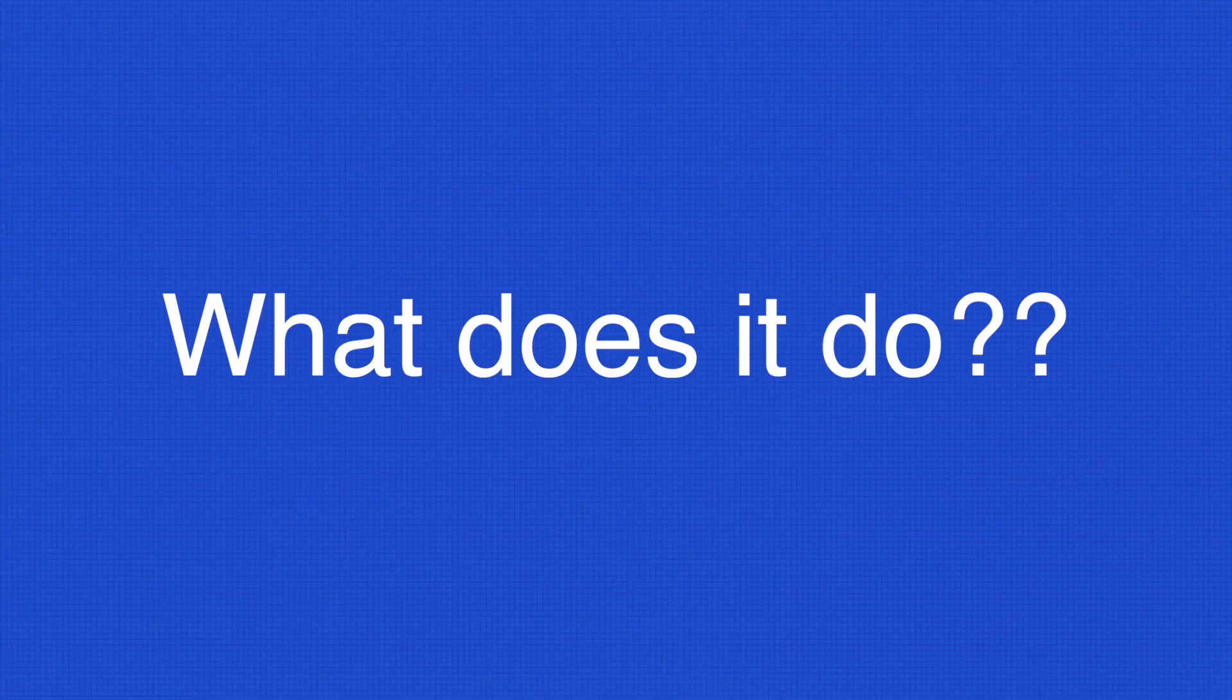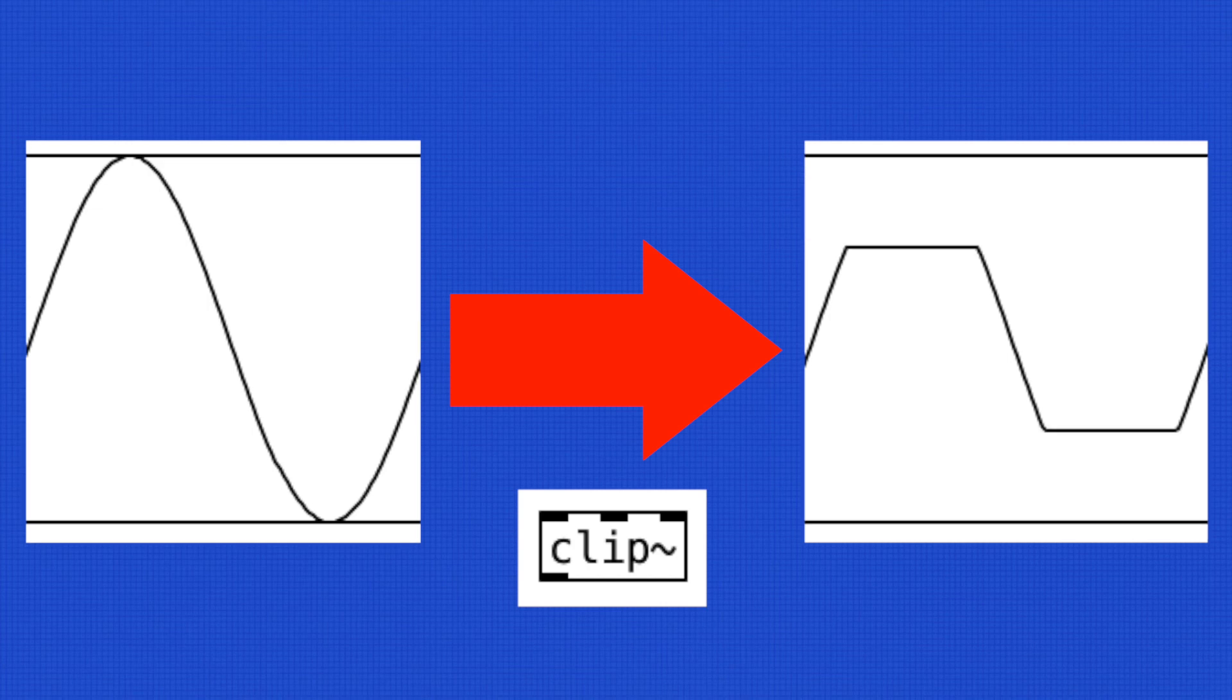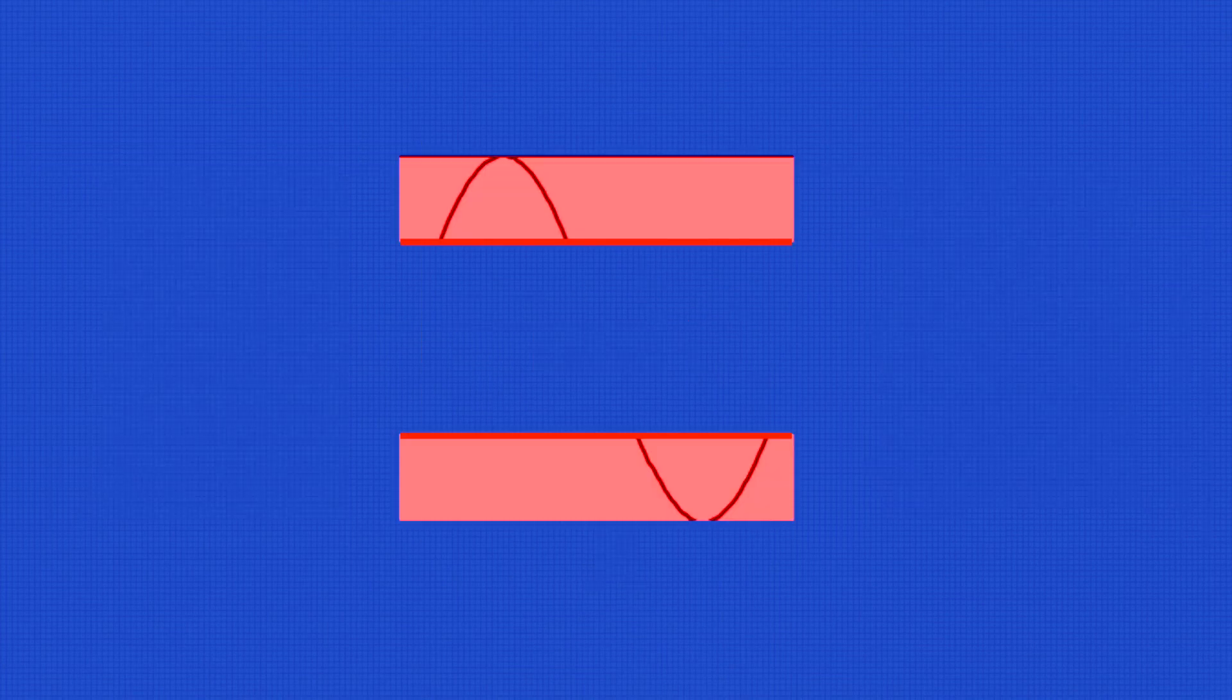So what does it do exactly? This object will retain the input sound's gain within a selected range, and the extra signal beyond that range will simply get cut or clipped off. And that extra signal will not come out of our speakers.